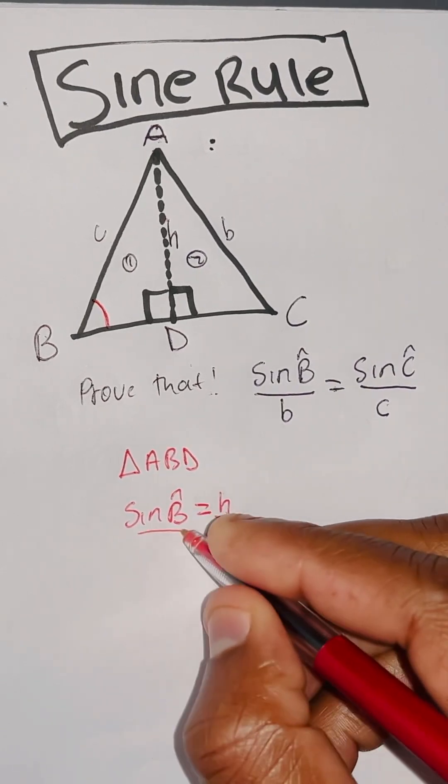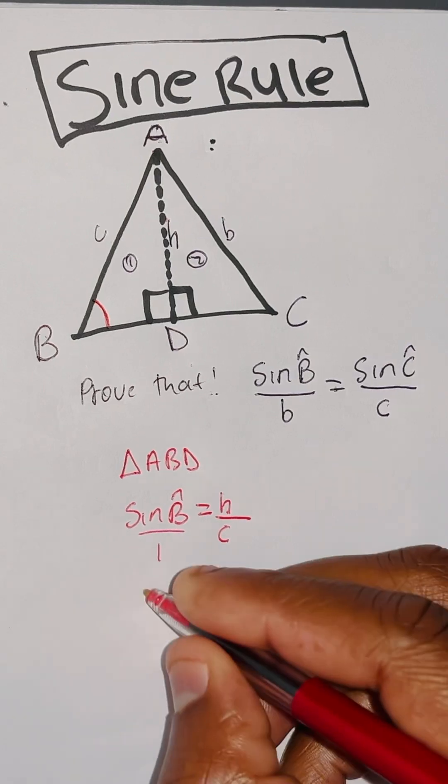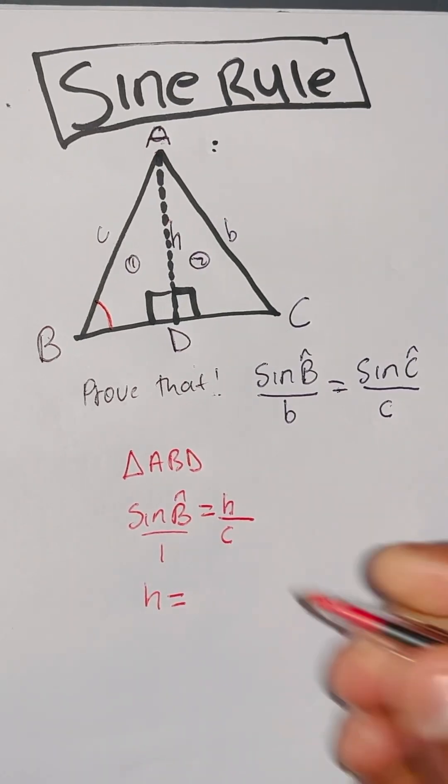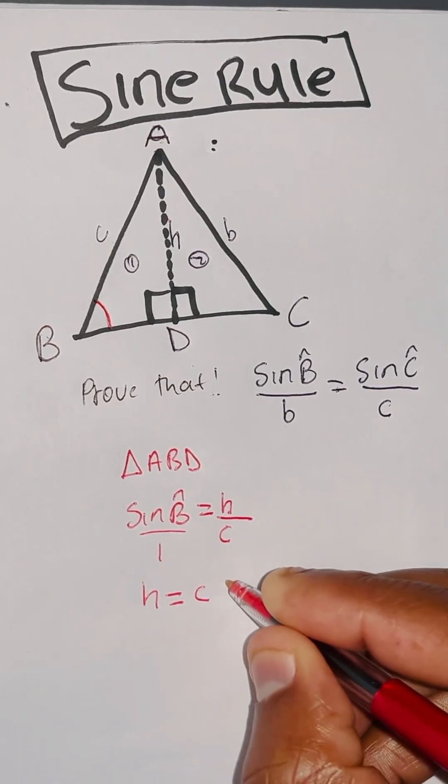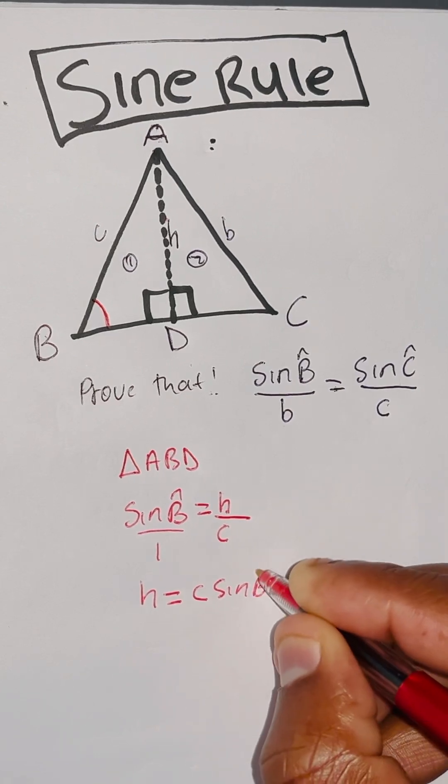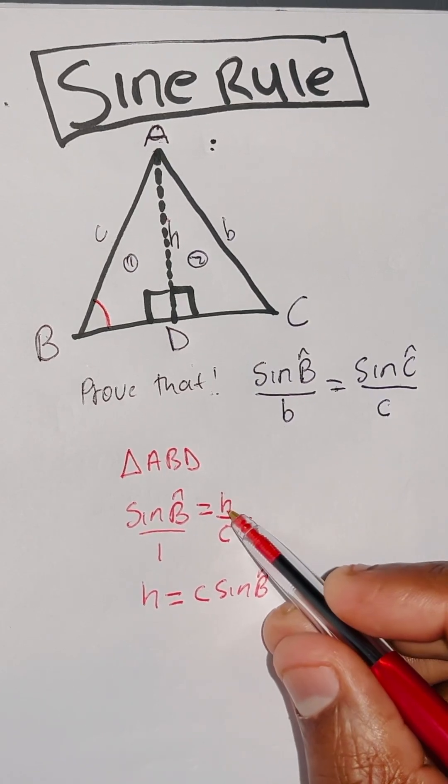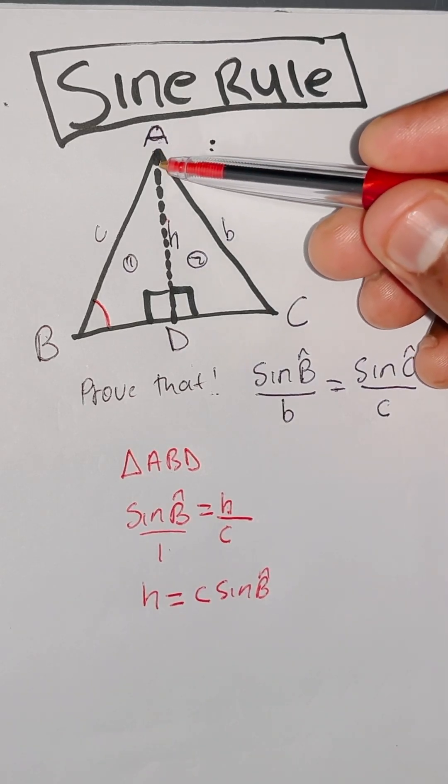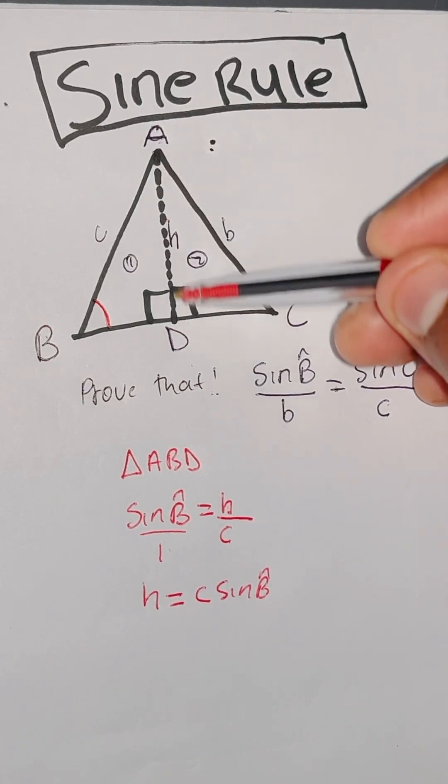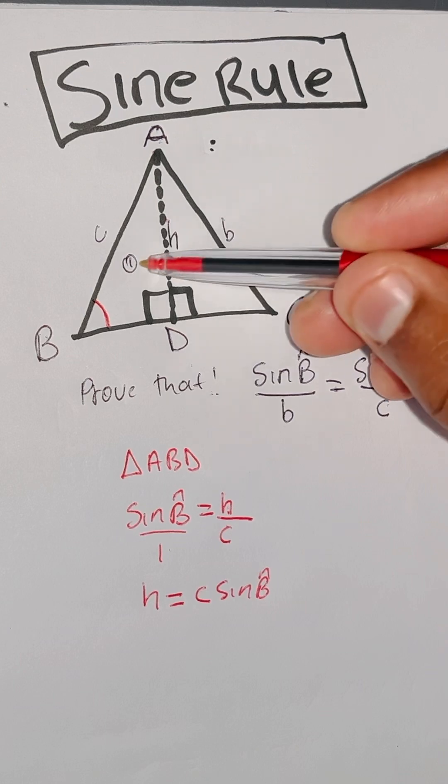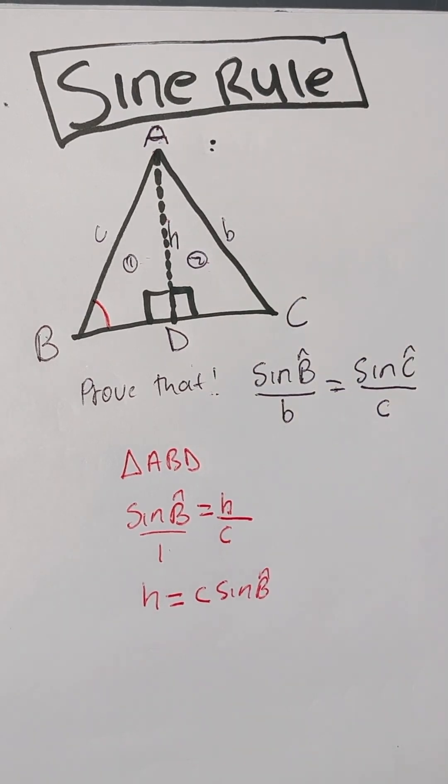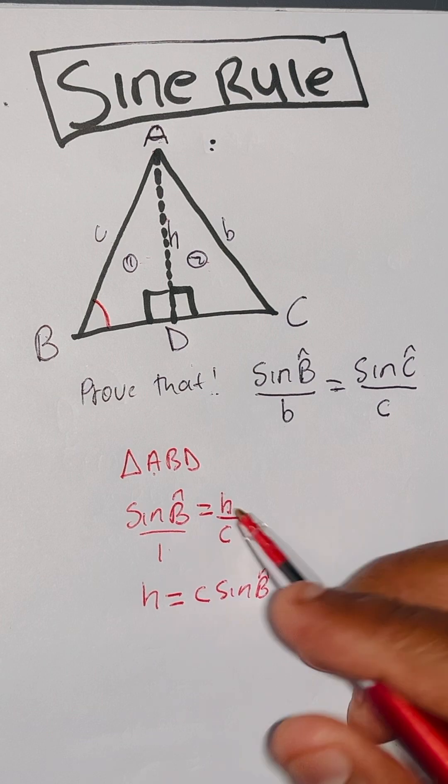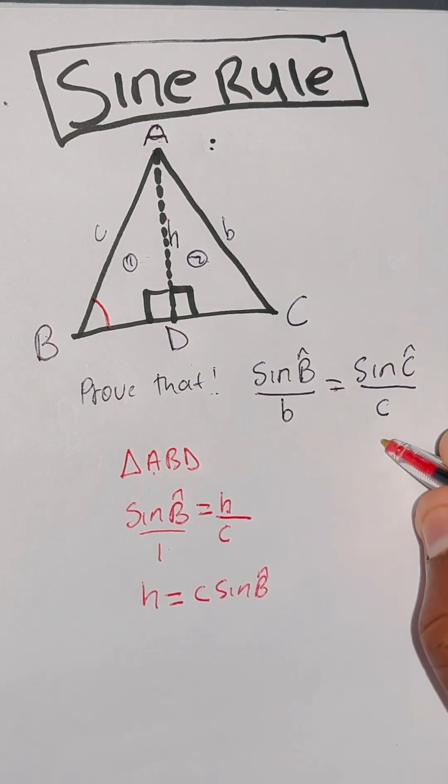Therefore, now you can make H the subject. H equals C sine angle B. Why am I making H the subject? It is because H is common for both right angle triangles. So let me move to triangle number two.